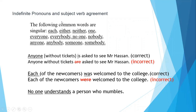Now we have indefinite pronouns: each, either, neither, one, everyone, everybody, no one, nobody, anybody, somebody, someone. These are all used as singular subjects, so the verb must always be singular. For example: 'Anyone without tickets is asked to see Mr. Hassan.' This is correct. Writing 'are asked' would be incorrect because 'anyone' is an indefinite pronoun and is treated as a singular subject. Don't be confused by 'tickets' — that is part of the phrase, not the subject.